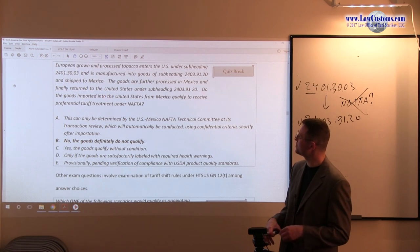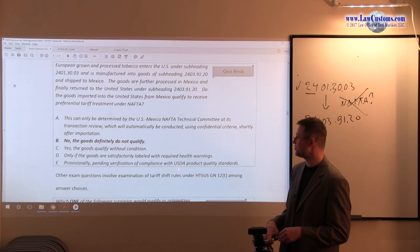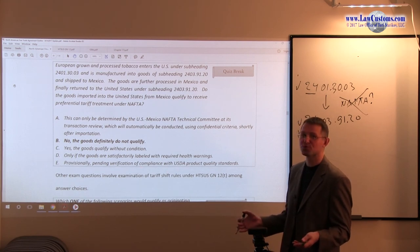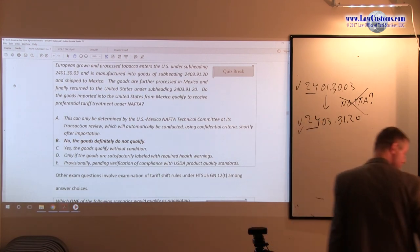Whatever they require is not responsive to the question. Because do the goods imported into the US-Mexico qualify to receive NAFTA? This is not responsive to NAFTA. It is responsive to the PGA requirement. E, provisionally pending verification of compliance with USDA product quality standard is the same as with D. It's not responsive to the question. So E is incorrect, making B the correct answer choice.